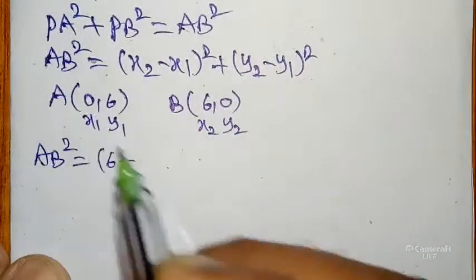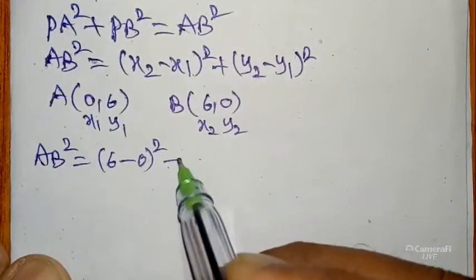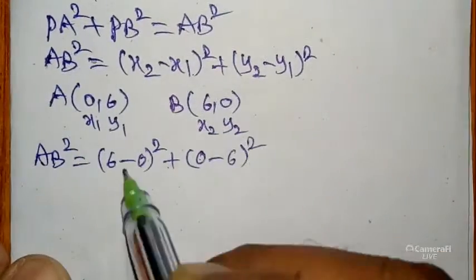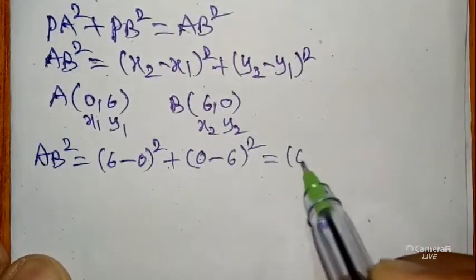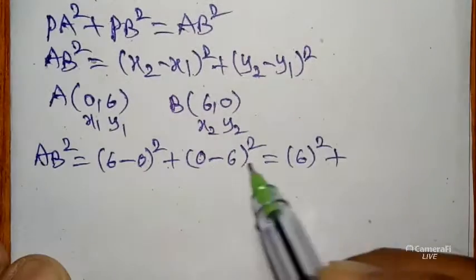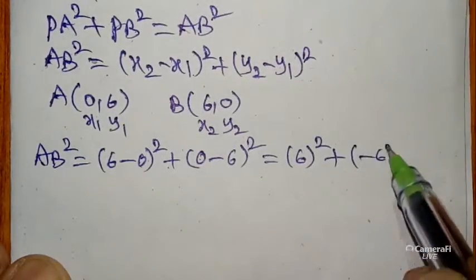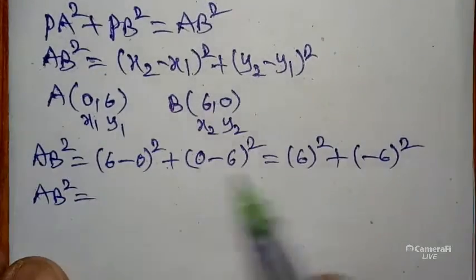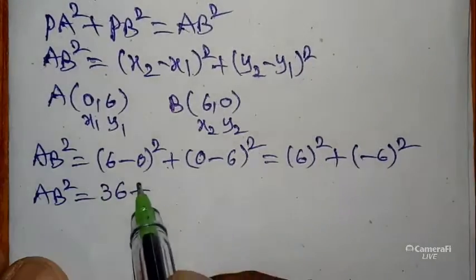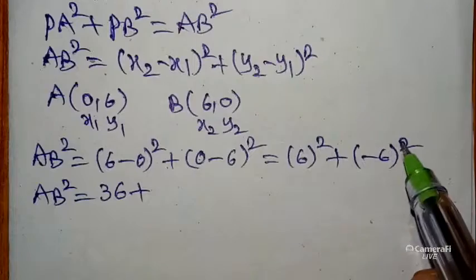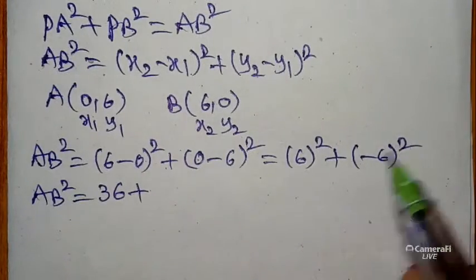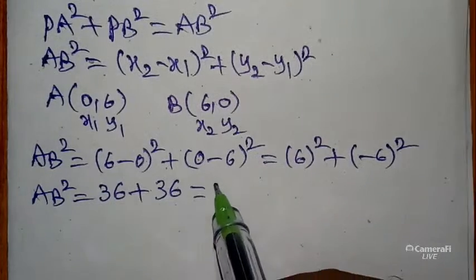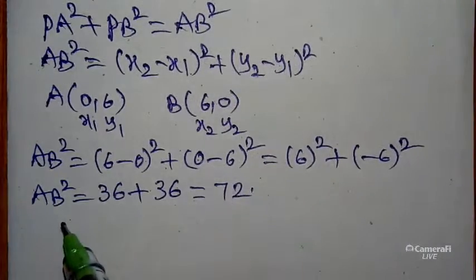Substituting into the formula: AB² = (6 − 0)² + (0 − 6)² = 6² + (−6)² = 36 + 36 = 72. So AB² = 72.